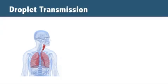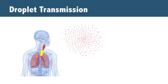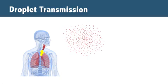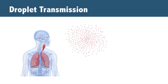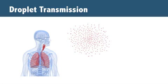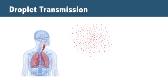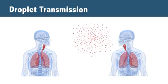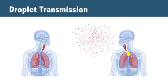Airborne transmission occurs when a person infected with a harmful germ like TB coughs, sneezes, laughs, and generates very small germ-containing particles called infectious droplet nuclei. Because these droplet nuclei are very small, they do not settle out of the air and stay suspended for a very long time, and can travel long distances from the source on air currents. If a susceptible person inhales these small droplet nuclei, they can become infected.